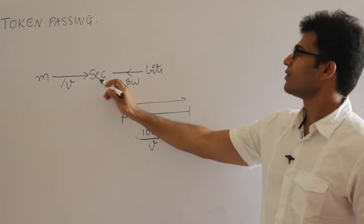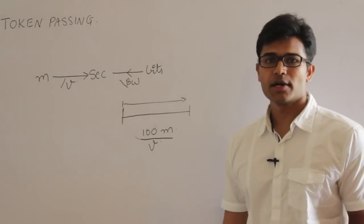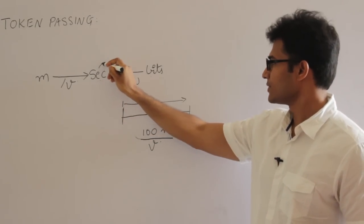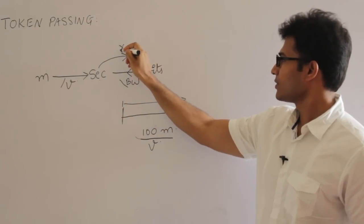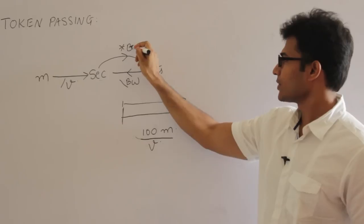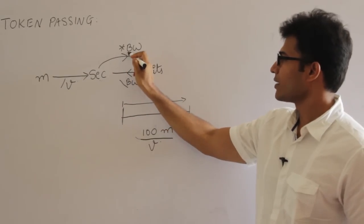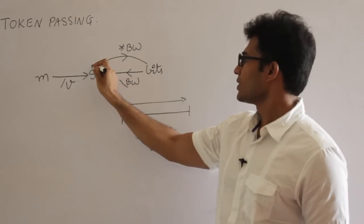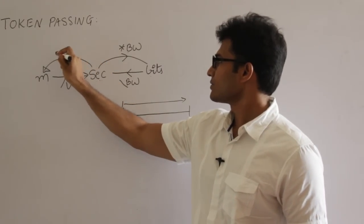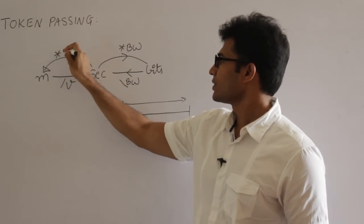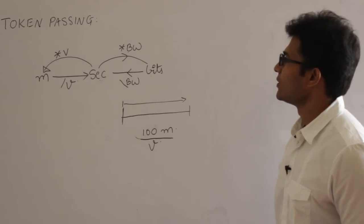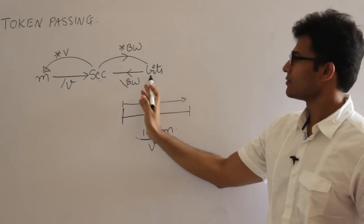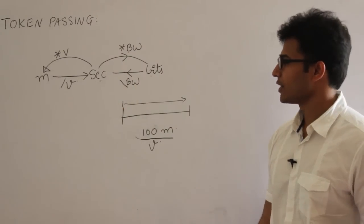Sometimes, given the time in seconds, you might want to convert it into bits. To convert seconds into bits, multiply with bandwidth. To convert seconds to meters, multiply with velocity. Using these conversions you can convert between seconds, meters, and bits in either direction.